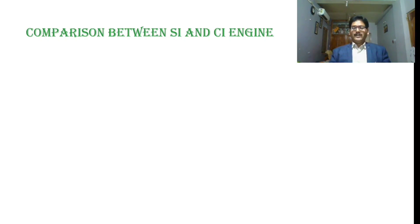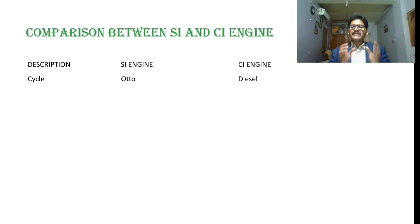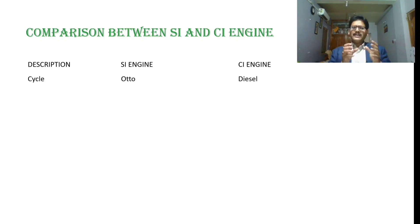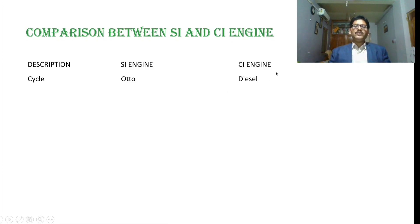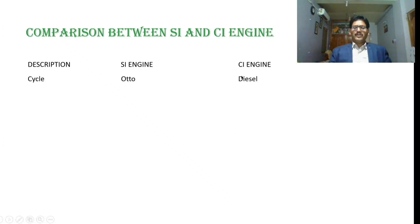Now we will compare the spark ignition engine with the compression ignition engine. We will discuss the Otto cycle and Diesel cycle with P-V and T-S diagrams in a separate lecture. The thermodynamic processes in the Otto cycle are: isentropic compression, constant volume heat addition, isentropic expansion, and constant volume heat rejection. Of these four processes, three are repeated in the compression ignition engine. Only the second process — constant volume heat addition in the Otto cycle — is substituted by a constant pressure heat addition process in the Diesel cycle.